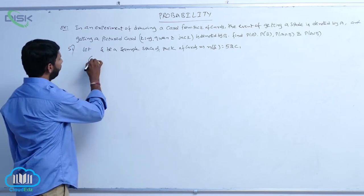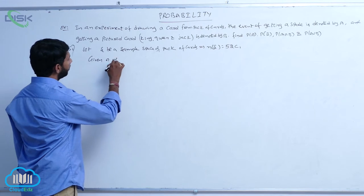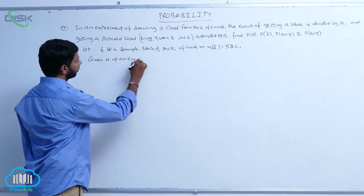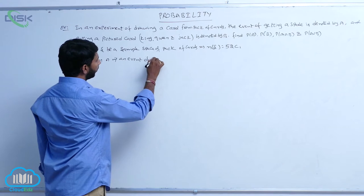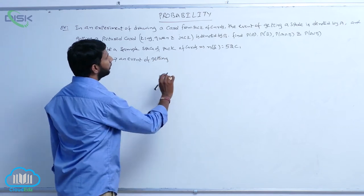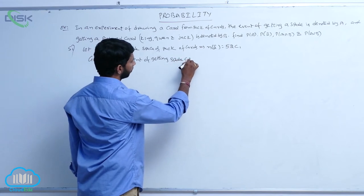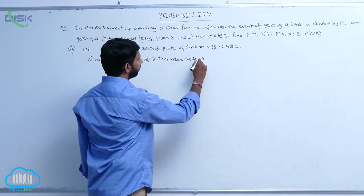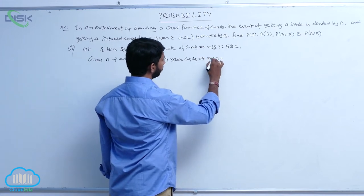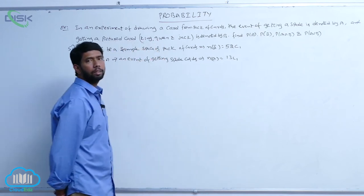Given A is an event of getting spade cards, then N of A is equal to 13C1. Here, spade cards are 13.